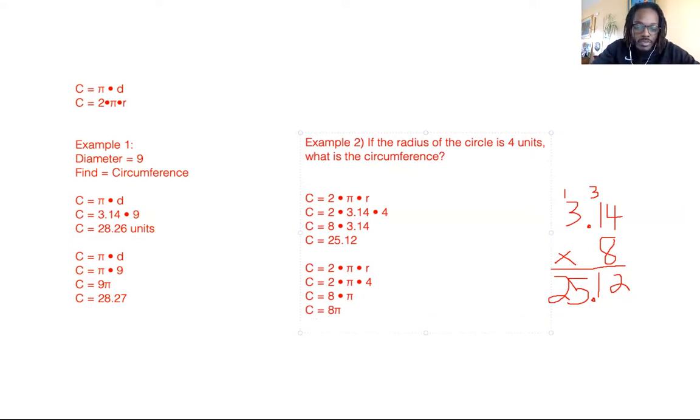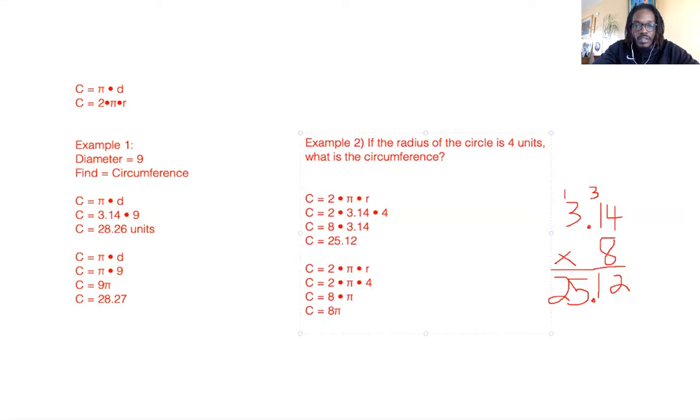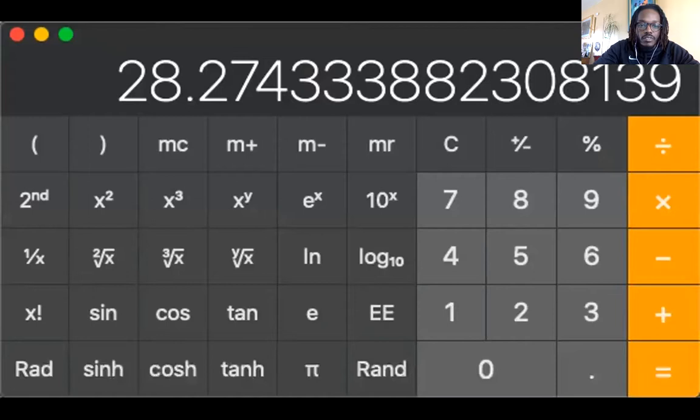The other answer that we could use is if we, again, go into the calculator. So we go into the calculator and we do that pi times eight. And then we get this really long irrational number that we just round up to the nearest hundreds place, which is we're focusing on this three. That number that comes after three is two. So we wouldn't round this 25.13 up. We would just leave it at 25.13.